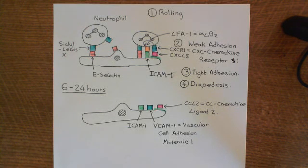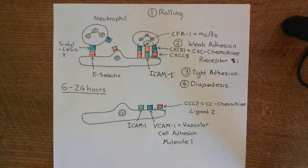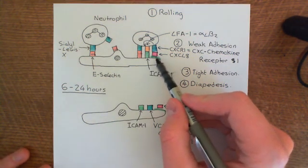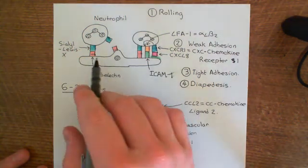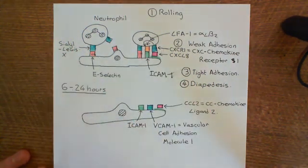Welcome to this next video discussing the acute inflammatory response and anti-inflammatory drugs. We're getting to the end of our discussion of the acute inflammatory response. We've discussed that type 2 activated endothelial cells first express E-selectin and CXCL8, allowing them to recruit more neutrophils than type 1 activated endothelial cells were recruiting.